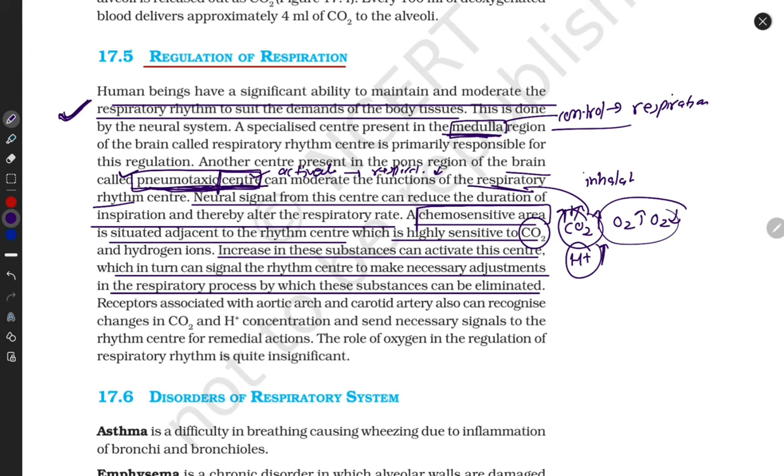Some aortic arc and carotid artery connected with heart can also recognize changes in CO2 and H+ concentration in our body and send necessary signals to the rhythmic center for remedial action to take inhalation. The role of oxygen in regulation of respiratory rhythm is quite insignificant. CO2 shows high activation level, high response level, high signal level towards the pneumotoxic center.